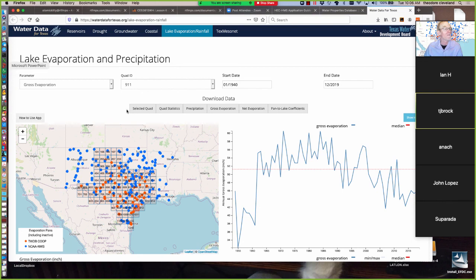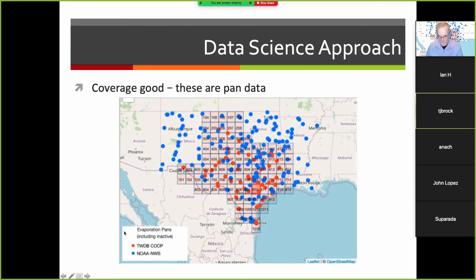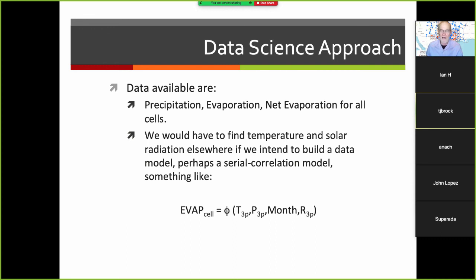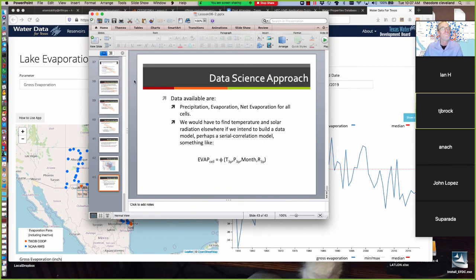Returning to the PowerPoint: this data would give good coverage in the absence of anything else available — we can get precipitation, evaporation, and net evaporation for all the cells we want. For temperature and solar radiation, we'd find those elsewhere and build a correlation model. Perhaps the evaporation in the cell is some function of the prior three months of temperature, the prior three months of precipitation, the month being predicted, and the prior three months of solar radiation. The solar radiation information was conveniently disclosed in one of our prior lessons.